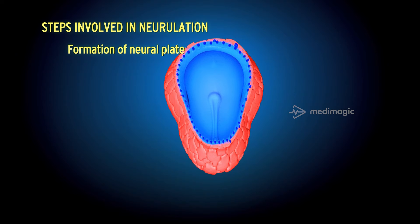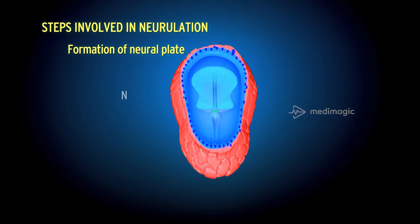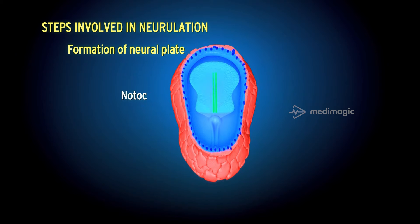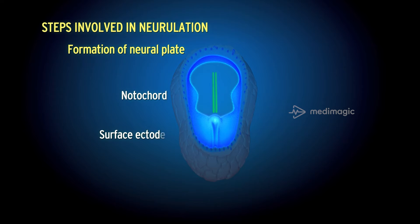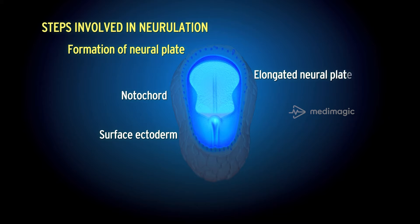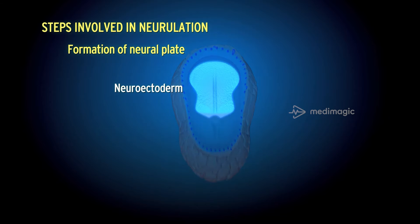Formation of Neural Plate. During the development of the notochord, the surface ectoderm over the developing notochord thickens to form an elongated neural plate. The neuroectoderm of the neural plate gives rise to the central nervous system.